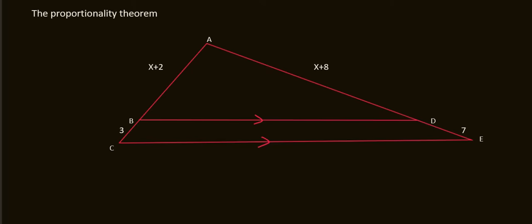So in this question we need to solve for X. So what we know is for example we can say that AB over BC, so that's this one divided by this one, must be equal to, now you match it. So on that side it's going to be AD over DE.